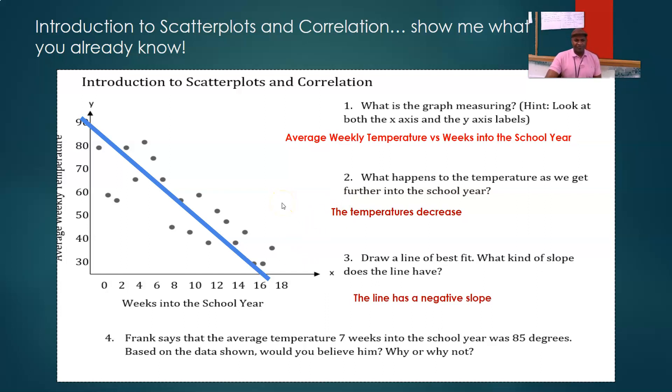And for number four, let's say Frank says the average temperature seven weeks into the school year is 85 degrees. Based upon the data shown, would you believe him? Well, here's about where our seven weeks would be. Do we have a data point there that shows that the temperature is 85 degrees? No, we don't.